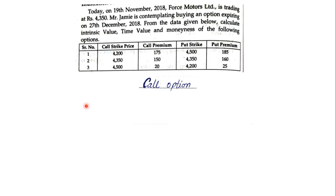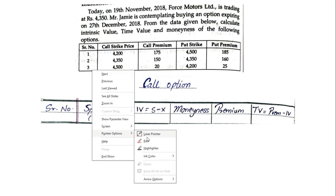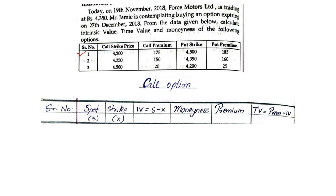From the data given below, calculate the intrinsic value, time value, and moneyness of the following options. They are giving you call strike price, call premium, put strike price, and put premium. We're going to solve the sum first based on call option. The table you'll have to create has serial number, and in our sum we have serial numbers 1, 2, and 3. Next column is spot rate.